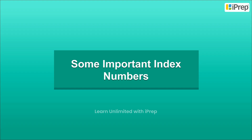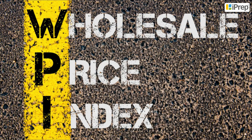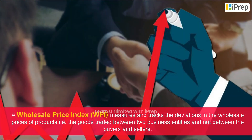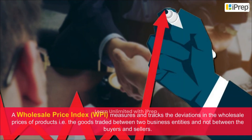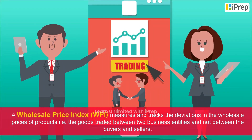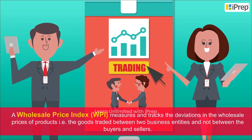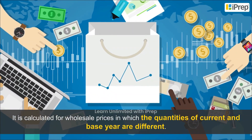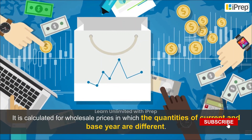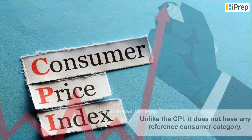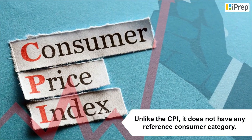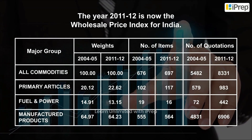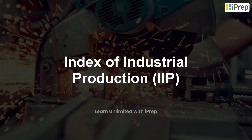The Wholesale Price Index (WPI) measures and tracks deviations in the wholesale prices of products — that is, goods traded between two business entities, and not between buyers and sellers. It is calculated for wholesale prices in which the quantities of current and base year are different. Unlike the CPI, it does not have any reference consumer category. The year 2011-12 is now used as the base year for the WPI in India.